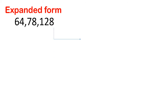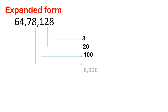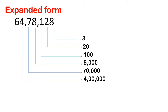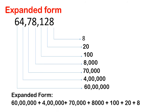Now we are going to write the expanded form in another way using direct place values. The place value of 8 is ones, so 8. Place value of 2 is tens, so 20. Place value of 1 is hundreds, so 100. Place value of 8 is thousands, so 8,000. Place value of 7 is 10,000, so 70,000. Place value of 4 is lakhs, so 4 lakhs. Place value of 6 is ten lakhs, so 60 lakhs. The expanded form is: 60 lakhs + 4 lakhs + 70,000 + 8,000 + 100 + 20 + 8. We can write it in this way also.